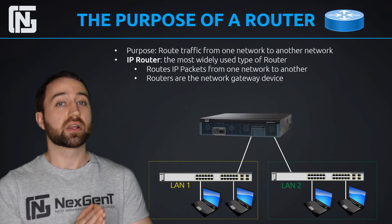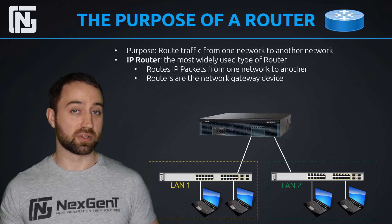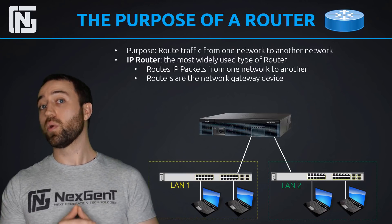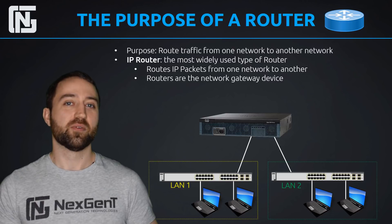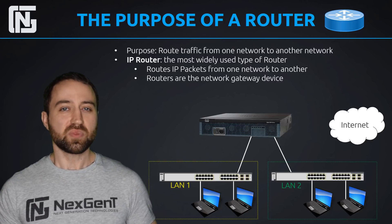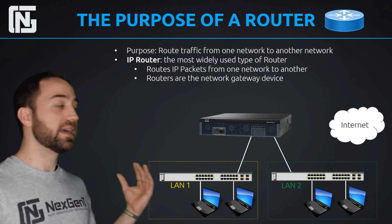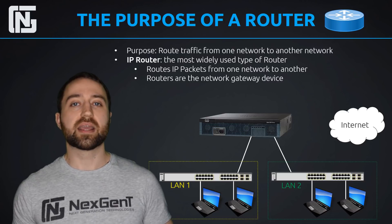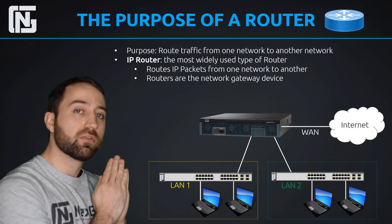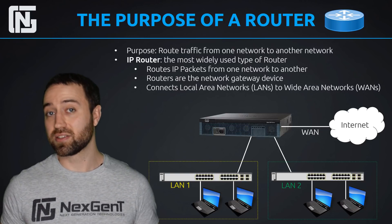Our router connects us from one LAN to another LAN, but there are other types of networks besides LANs. The most notable one is the internet. Our routers will connect us to the internet as well. Connecting to the internet is going over a different type of connection — not a LAN, but a wide area network or WAN connection. So even at your house, your router connects to your internet service provider over a WAN connection. We can say that routers connect LANs to WANs.